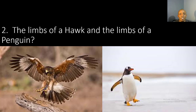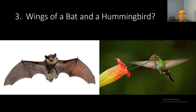Number two: the limbs of a hawk and the limbs of a penguin — are they shaped the same? Yes, they are shaped the same but they do have different functions. Number three: the wings of a bat and a hummingbird. They appear to have similar shapes but actually they do not, so the answer is no. The bat uses its wings to clasp and grasp prey, while the hummingbird only uses its wings to fly.